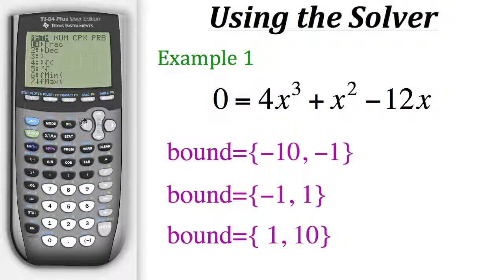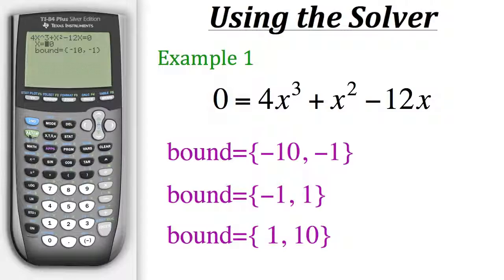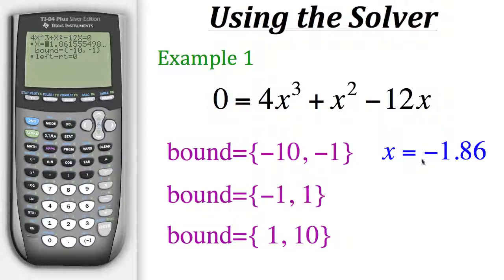So we'll get out of the graph and go back to our solver. Now let's change the bounds to find our first solution — from negative 10 to negative 1. We need to choose a guess within that interval, so let's say negative 7, because that's in between negative 10 and negative 1. Now to get the actual solution we'll hit alpha, enter. From this we can see that our x value is roughly negative 1.86.